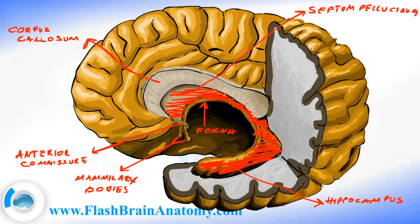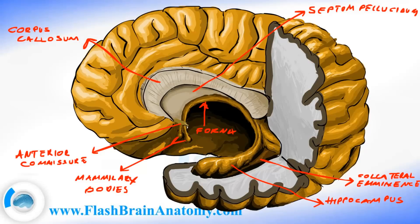We have opened the lateral ventricle, that's why we can see what's inside. This was the collateral eminence, and this was the calcar avis — it's made by the calcarine fissure from the outside. And this over here is the bulb of the posterior horn.